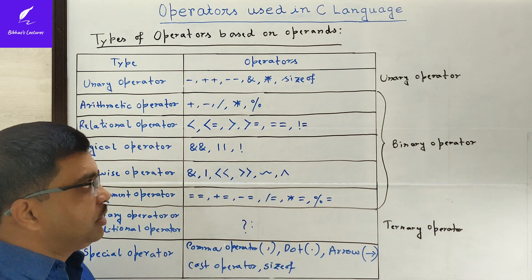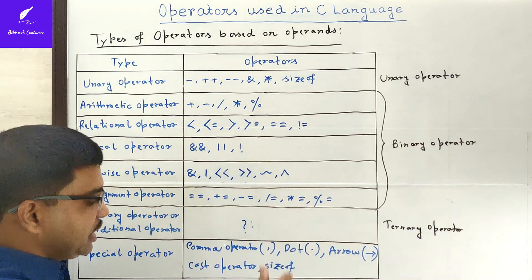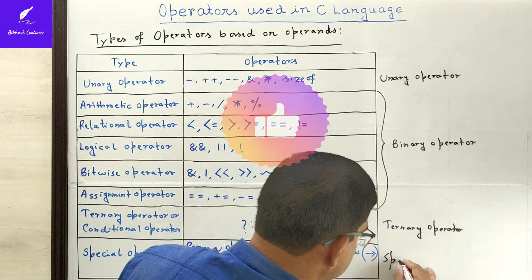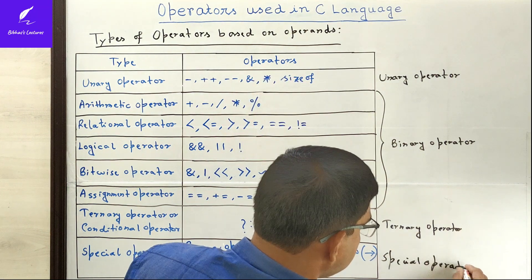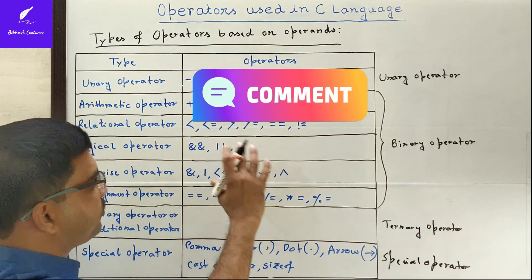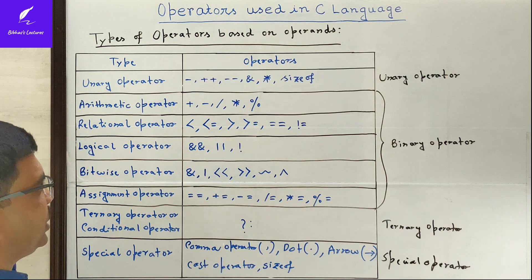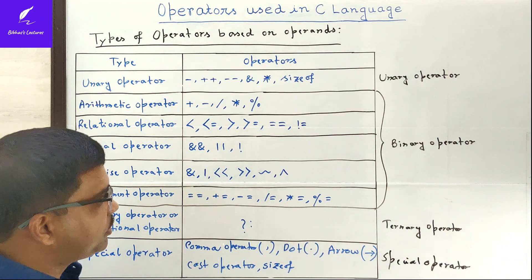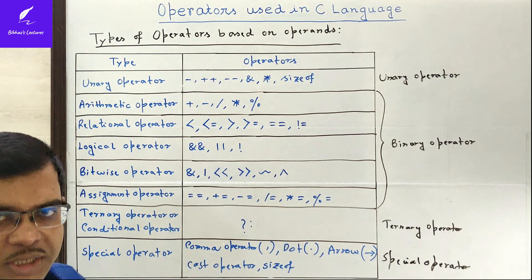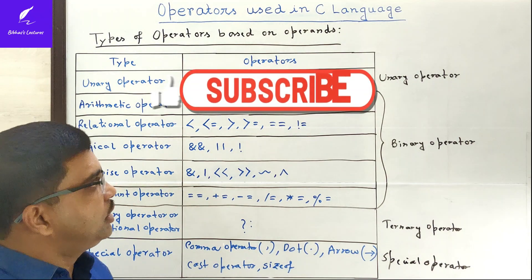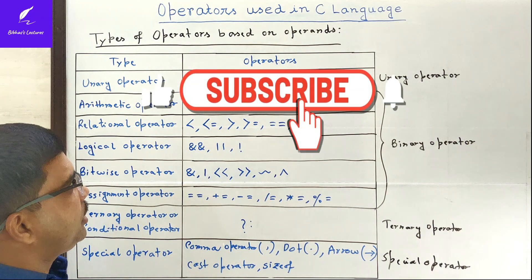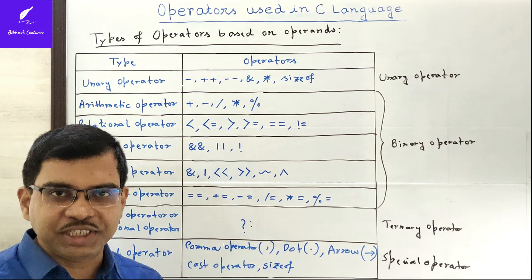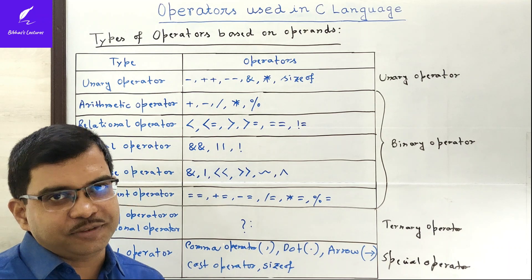So these are the different types of operators discussed today based on operands: unary, binary, ternary, and special operators. In the next video, I will explain each in detail with examples. I hope you have understood the basic concepts of operators available based on operands in C language. Thanks for watching — please take care and have a nice day.